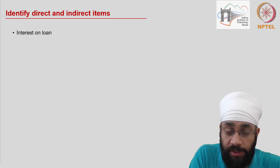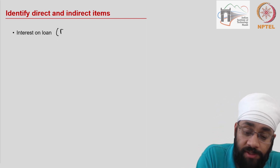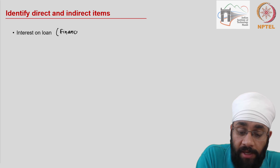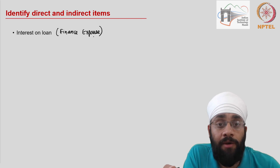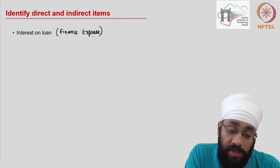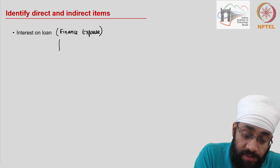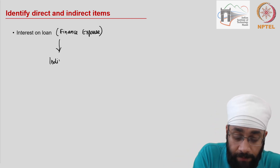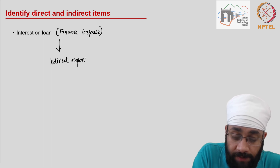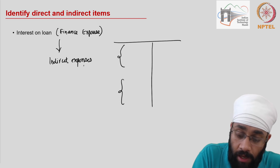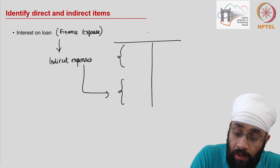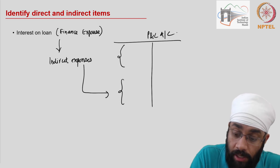The next item is interest on loan. Any expenses on a loan are categorized as finance expenses. This is clearly not related to manufacturing — it relates to the raising of a loan — so it is an indirect expense. All indirect expenses are shown in the second half of the profit and loss account.